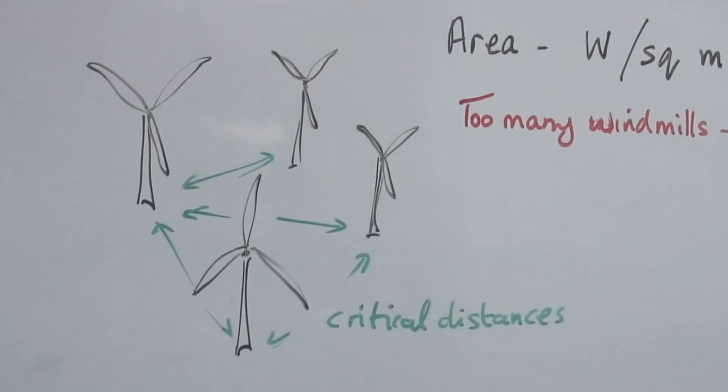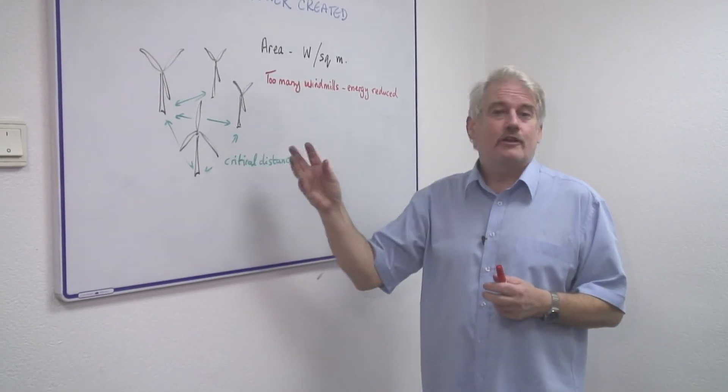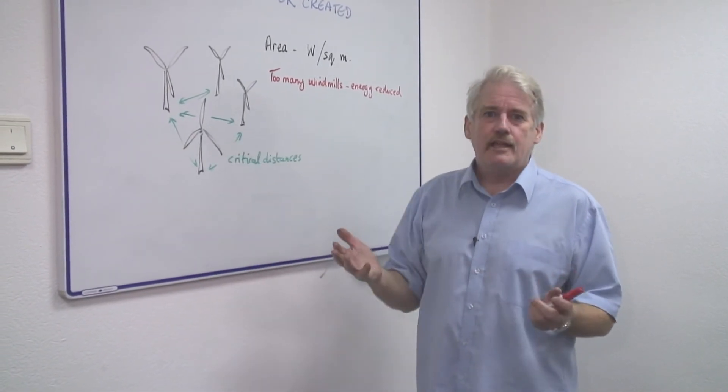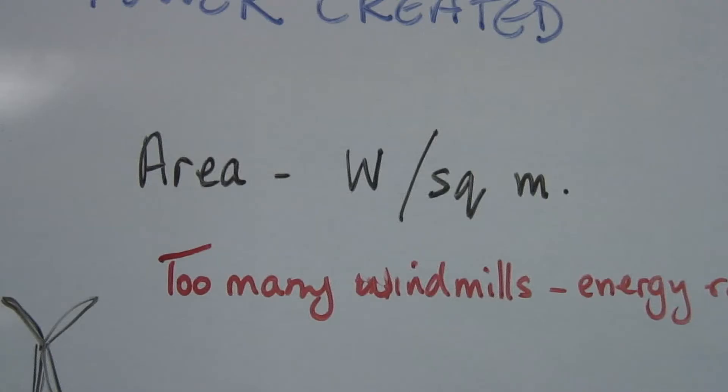If you put too many windmills in that area, you will find that some of the windmills produce a lot of energy and some don't produce any. But the overall amount will be according to this formula on the number of watts per square meter.